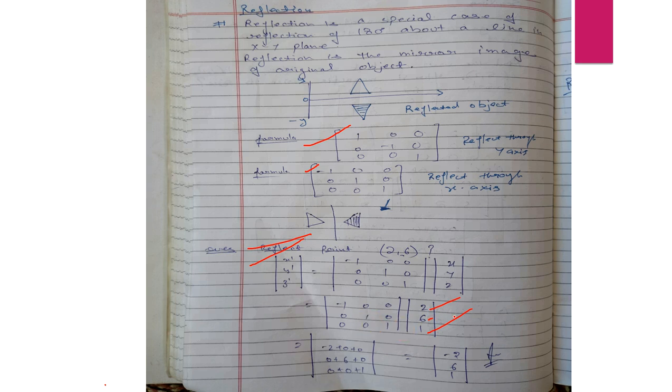Now we multiply. We can see how we find it. Multiply each row by each column: 2 times this, 0 times 0, and so on. When we add or subtract, the value is minus 2, 6, and 1. The answer is correct because the original value was 2, 6, and 1, and the reflected value is minus 2, 6, and 1.